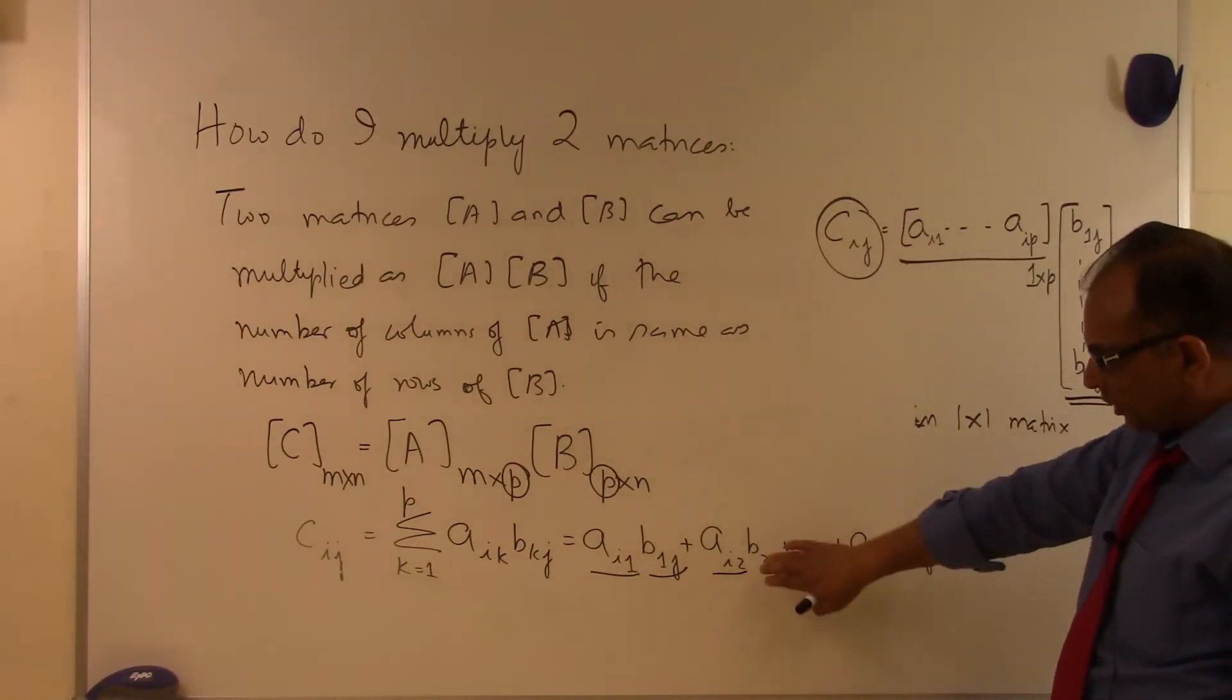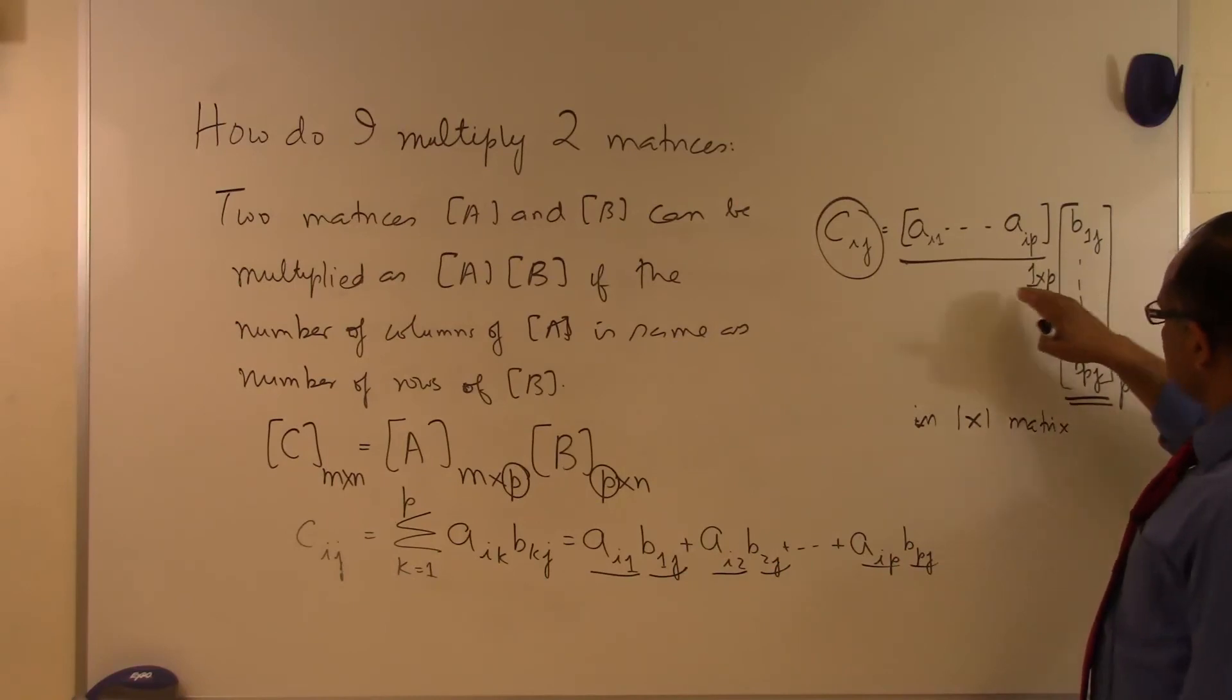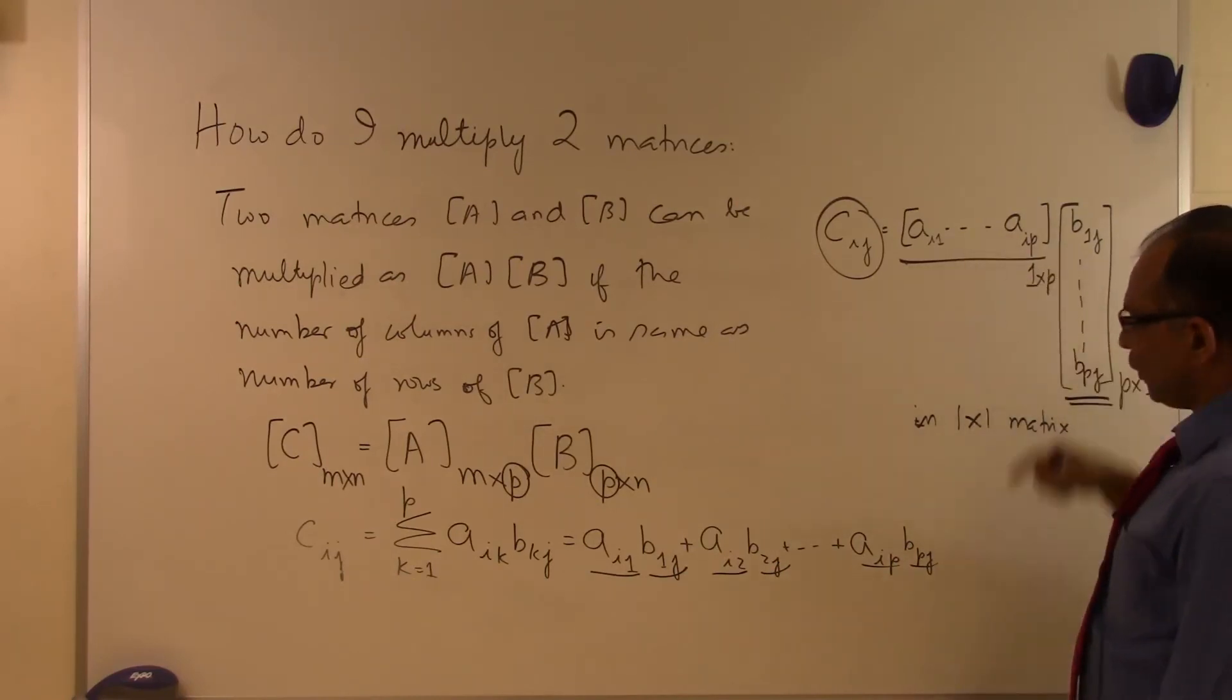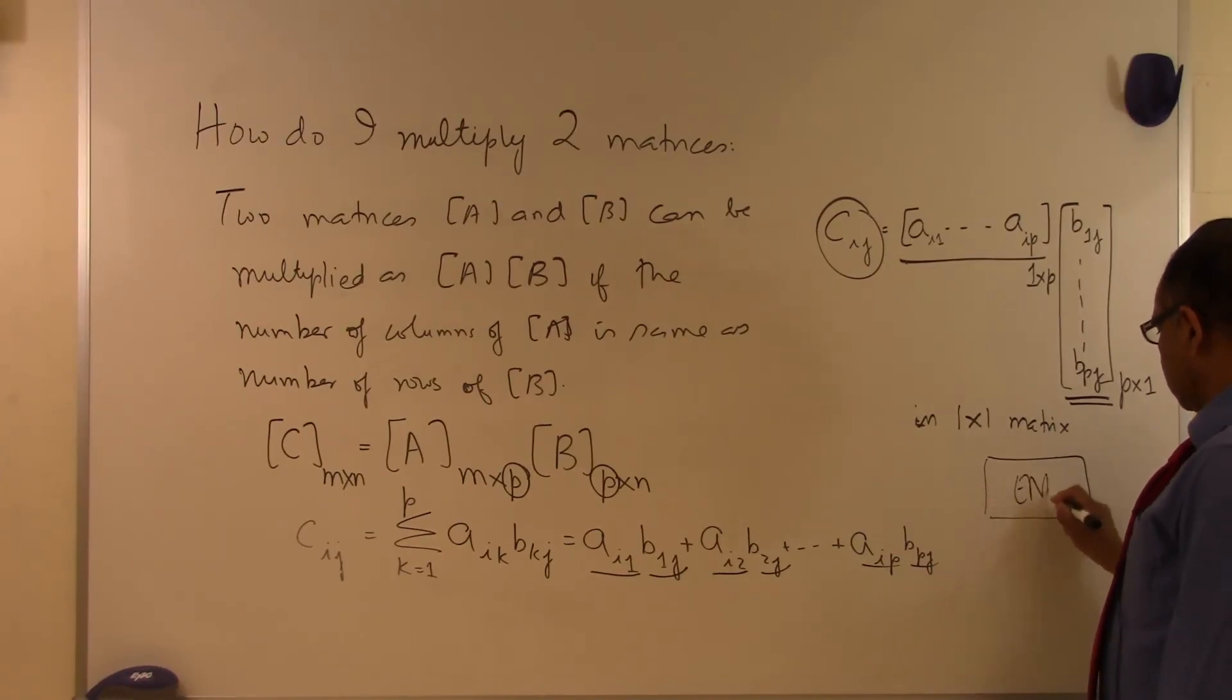You can view it as this summation or as a dot product of these two vectors. That's the end of this segment.